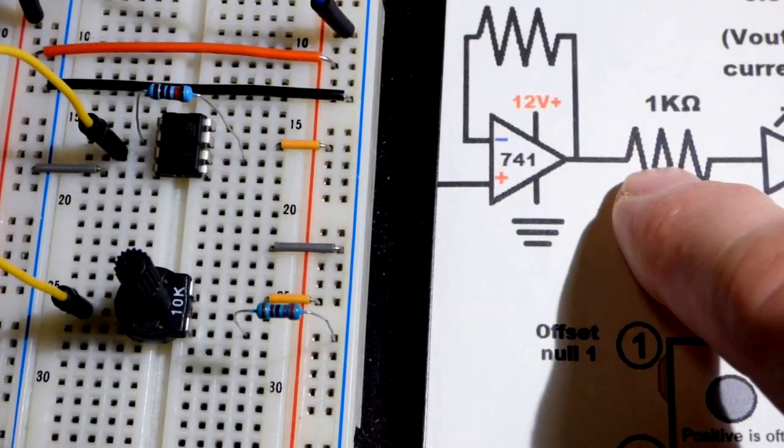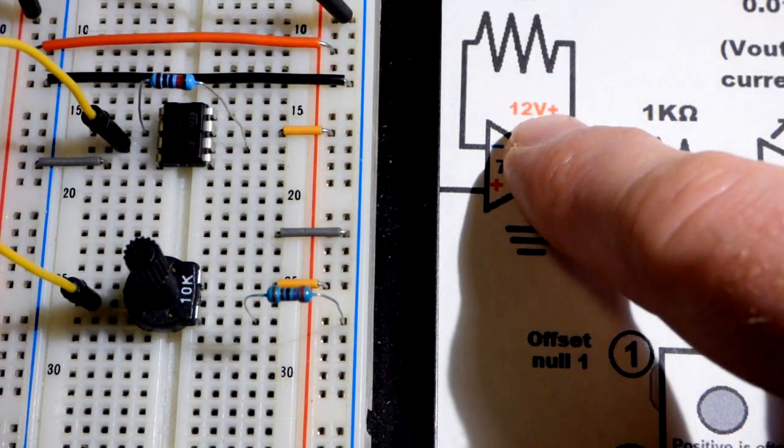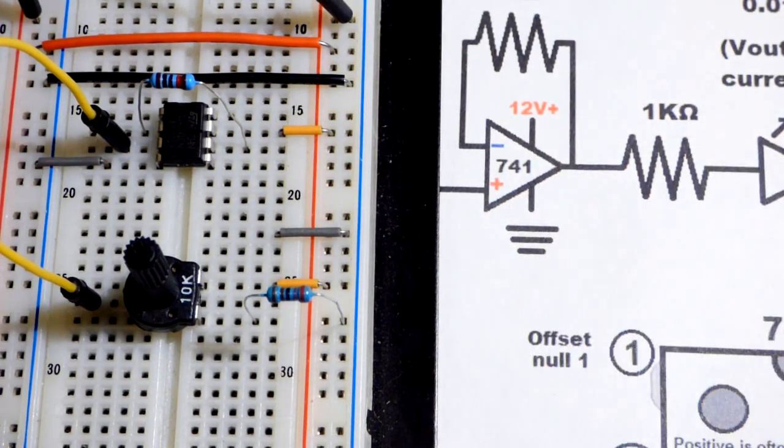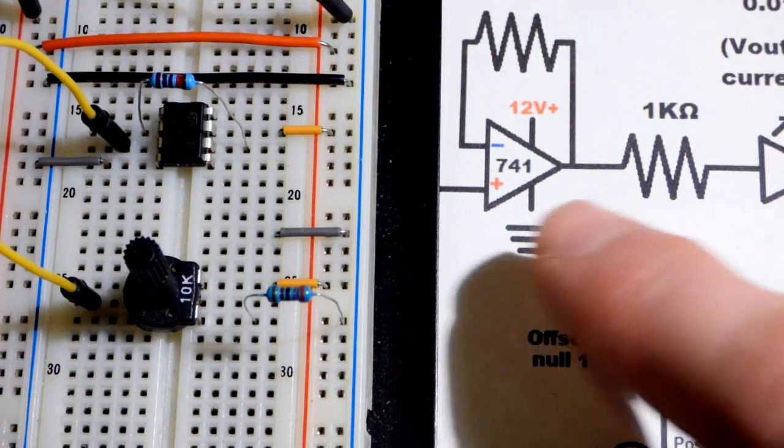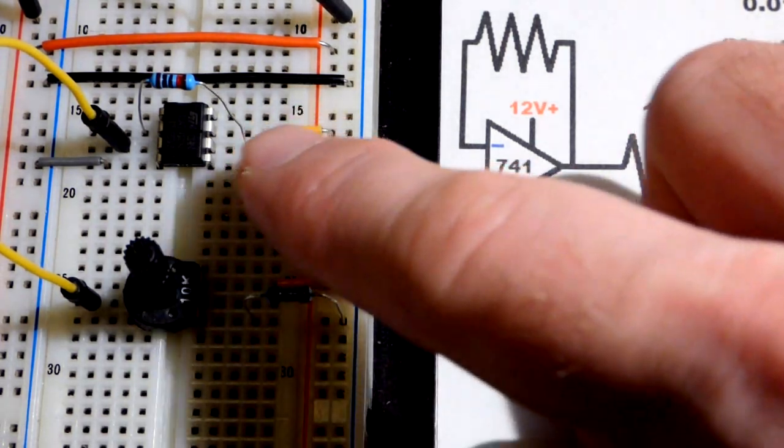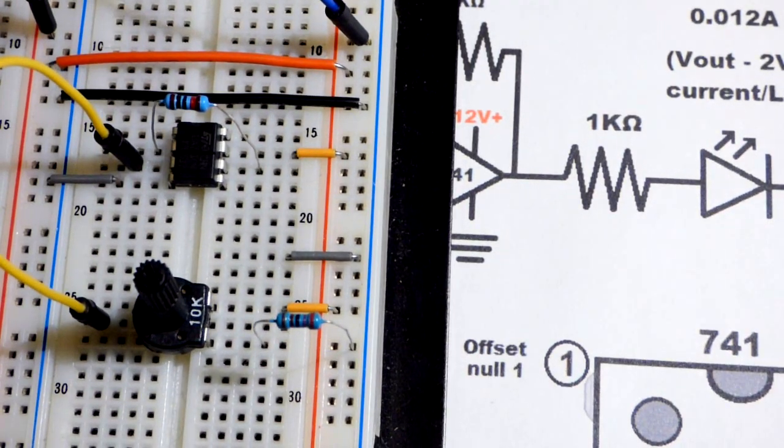We're just setting a voltage to the non-inverting input right there, and that sets the voltage to the output. The voltage that the output uses - the current I should say - comes from the power supply itself. There's high impedance coming in, low impedance going out. The component itself is not limiting current. In this case it will be the resistor and the LED.